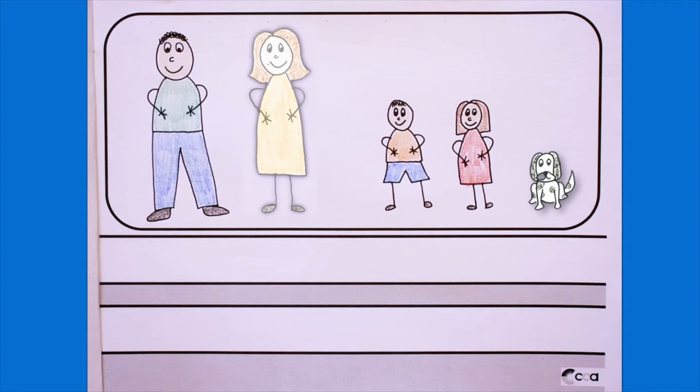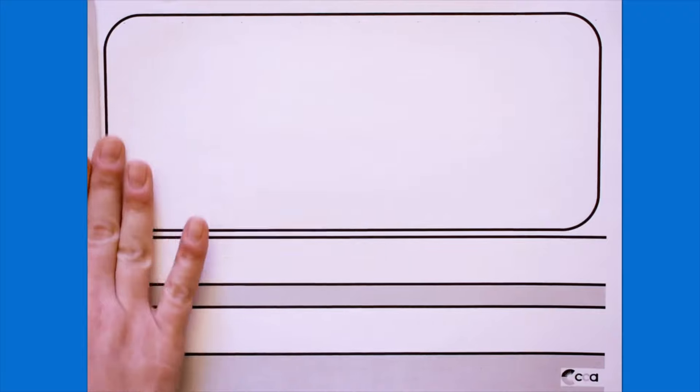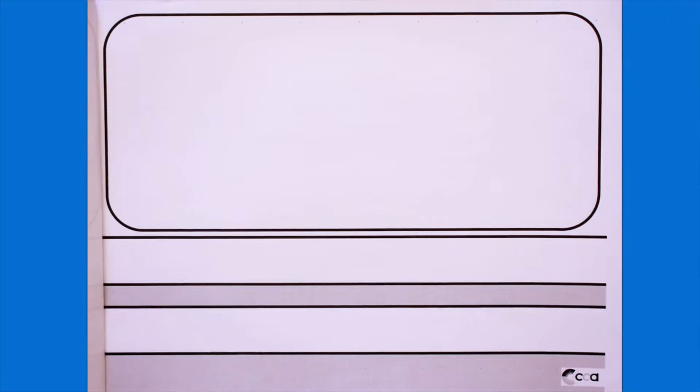Open to the next clean page in your journal. That is the page right after the last one you worked on. We don't want to skip any pages. Ask your learning coach to write the date at the top of the page. Your learning coach will write the date at the top of the page each time you work in your journal.